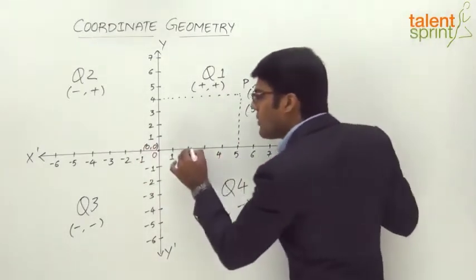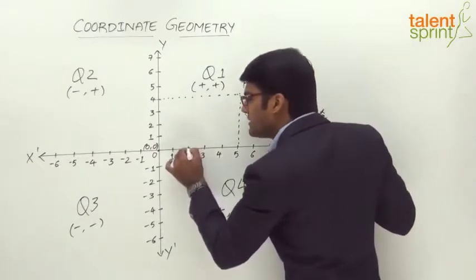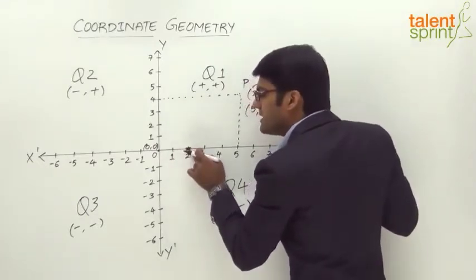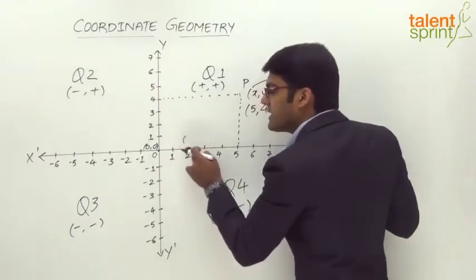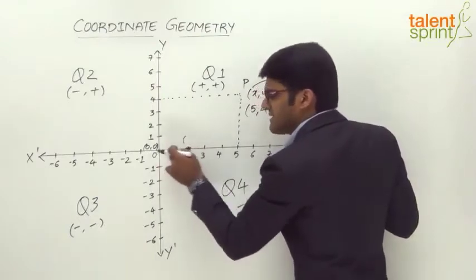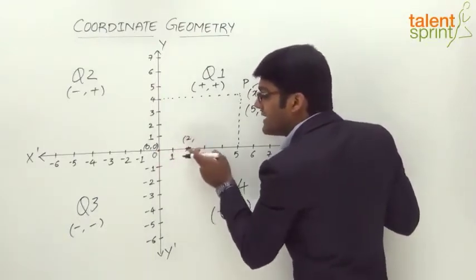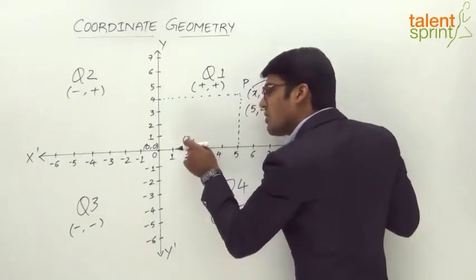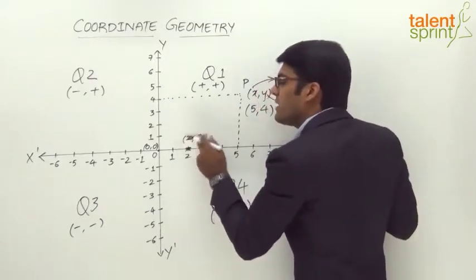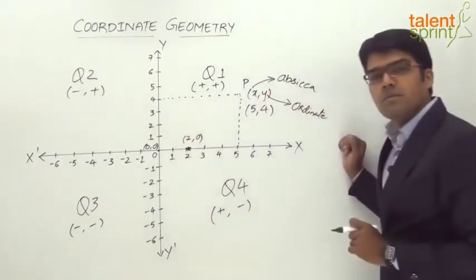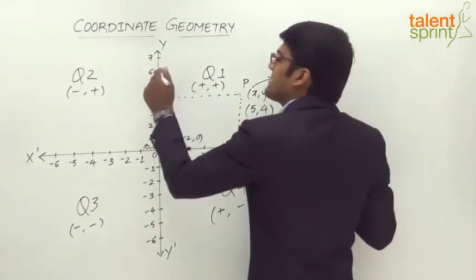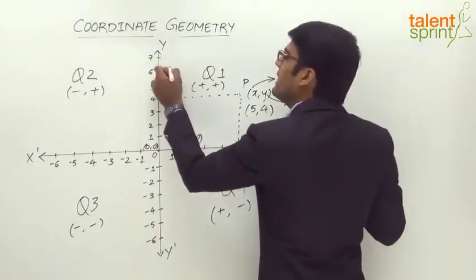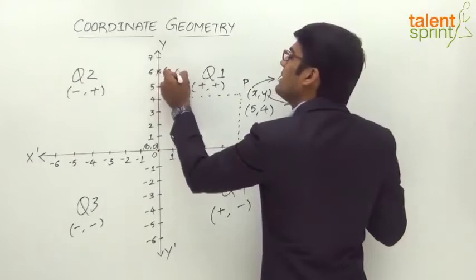Likewise, let's say there is a point at a distance of 2 units from the y-axis which is the horizontal distance, and at a distance of 0 units from the x-axis — it falls on the x-axis. So the ordinate will be equal to 0. If we take a point on the y-axis, that point can be described by (0, 6).